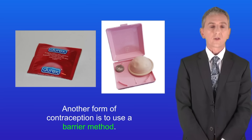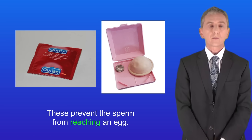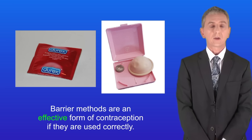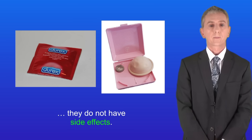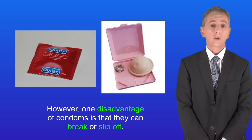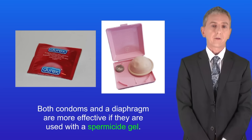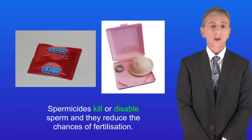Another form of contraception is to use a barrier method, such as a condom or a diaphragm. These prevent the sperm from reaching an egg and are an effective form of contraception if used correctly. One advantage is that because they don't use hormones, they don't have side effects, and condoms can also reduce the risk of STIs. However, a disadvantage is that condoms can break or slip off. Both condoms and a diaphragm are more effective if used with a spermicide gel, which kills or disables sperm and reduces the chances of fertilization.